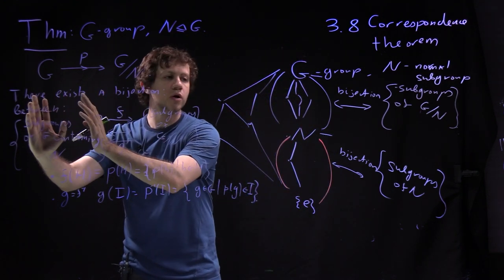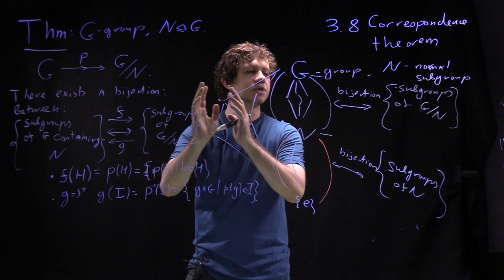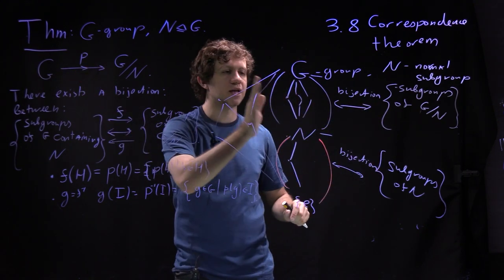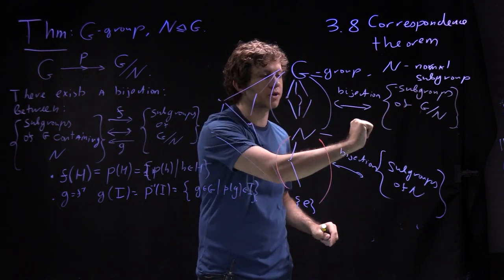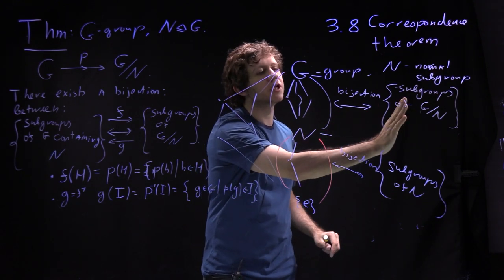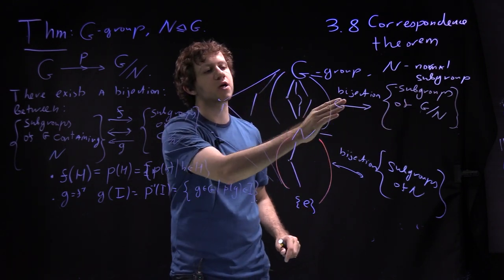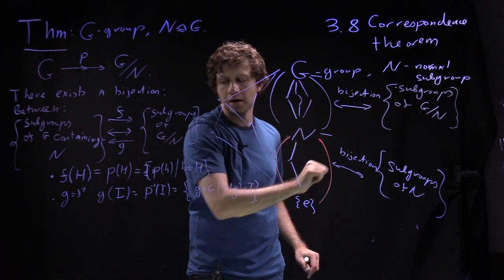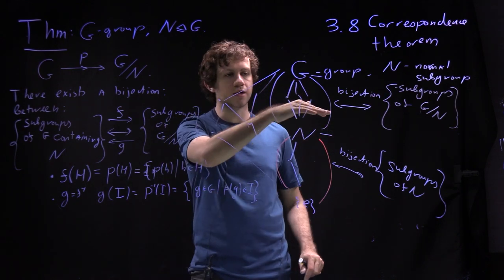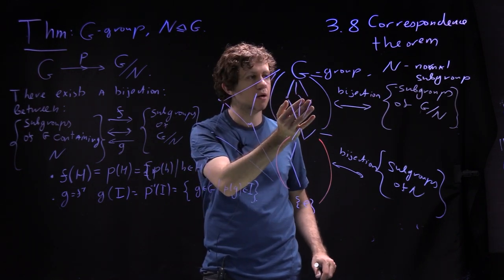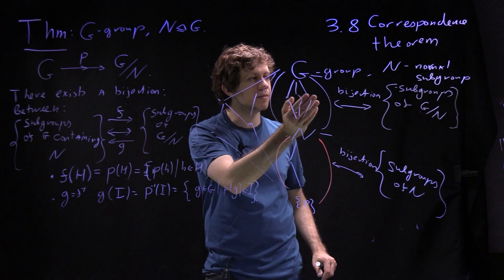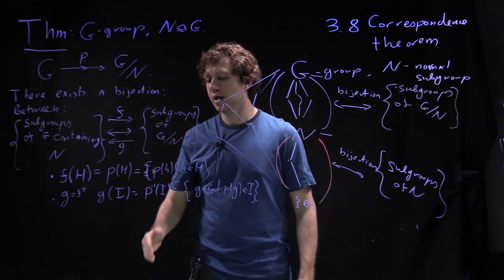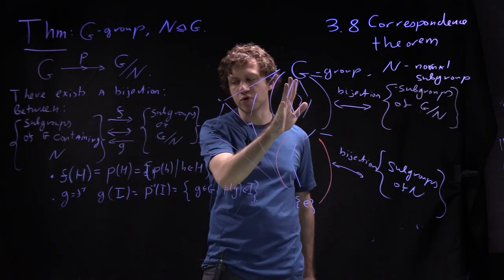You take a subgroup, you send it to its image: you apply P to all its elements and get a subgroup in G/N. You take a subgroup in G/N, you take its pre-image — you take all elements from G which map there. So basically you take the union of all cosets corresponding to the subgroup elements and take the pre-image.